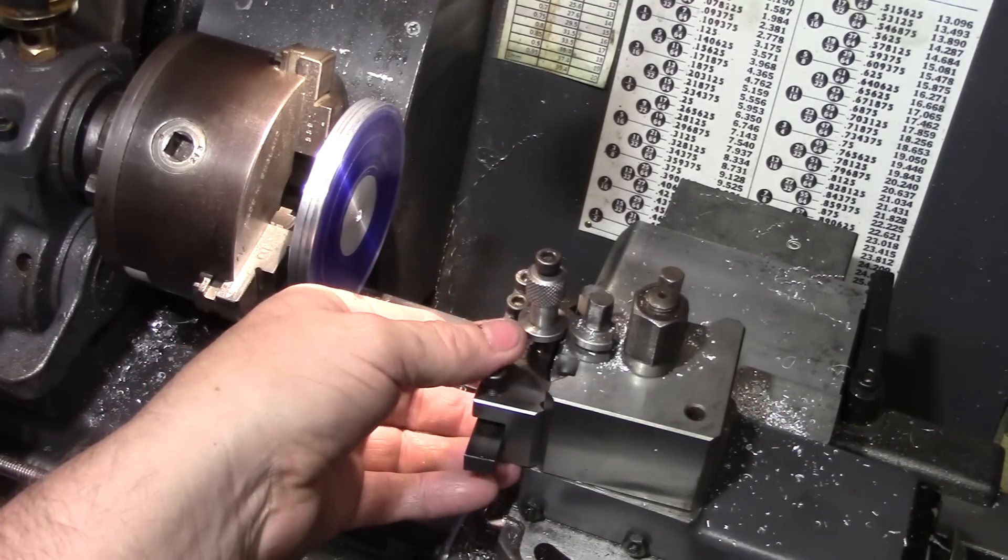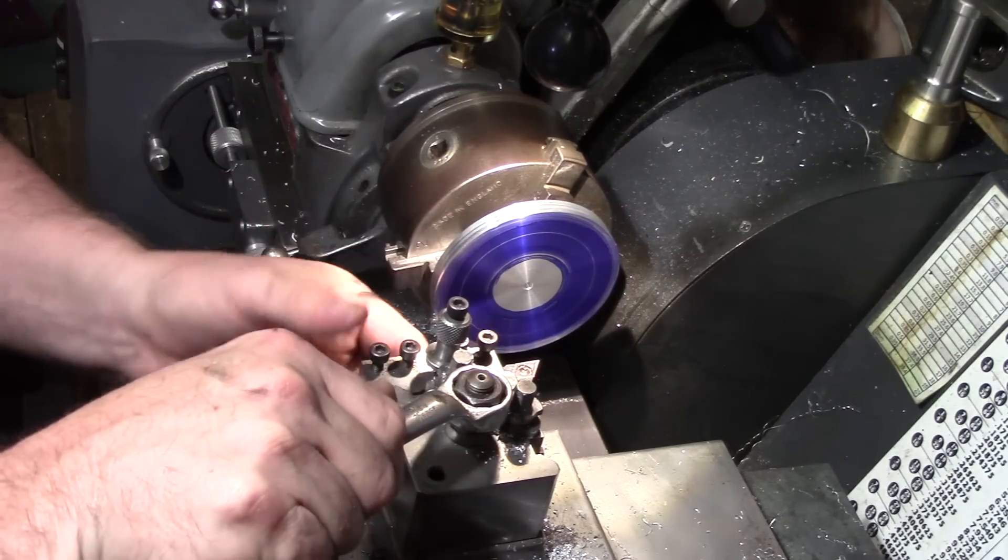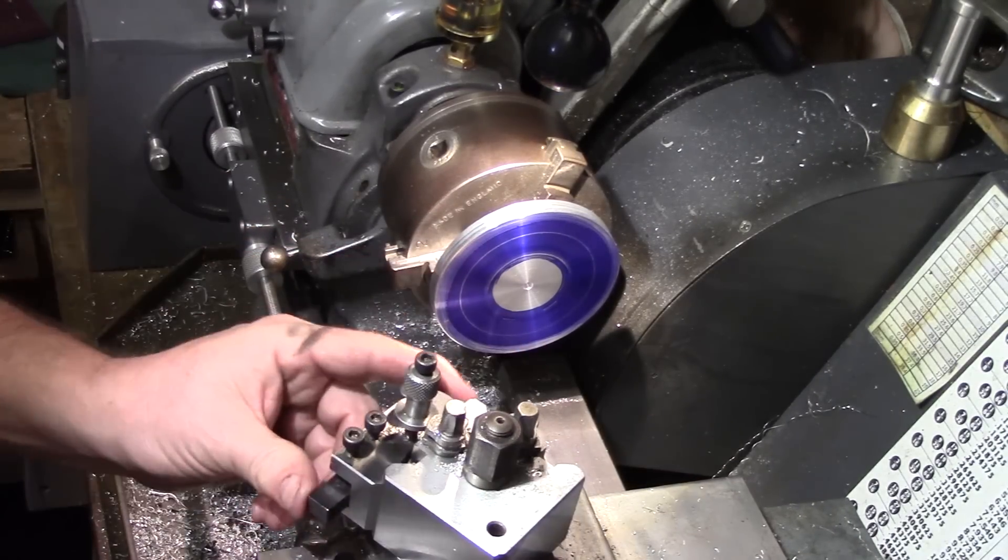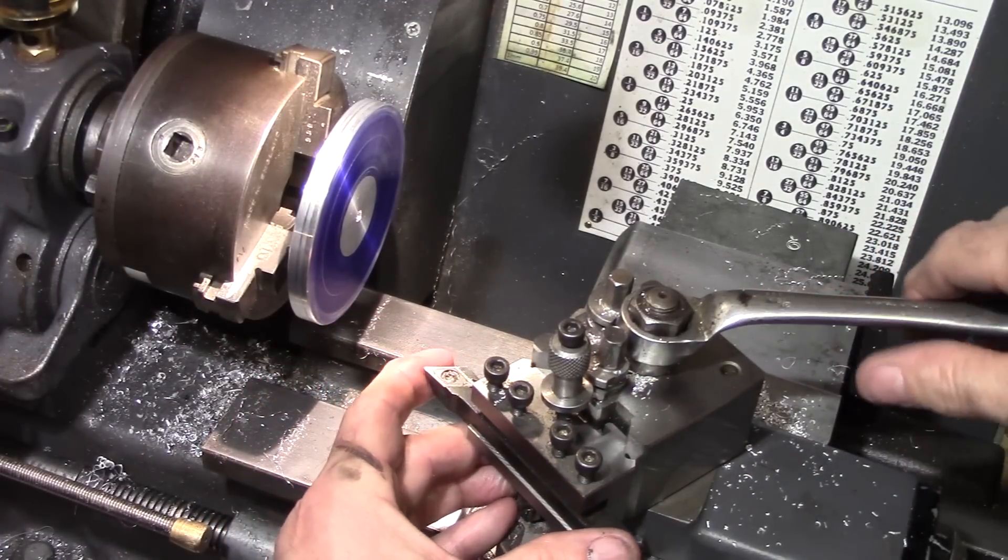I just need to rotate the tool post around, lock it down securely, and advance the tool towards the job and line it up with the scribe line.